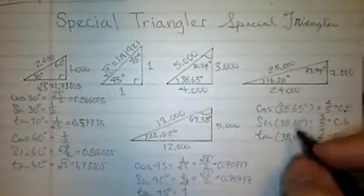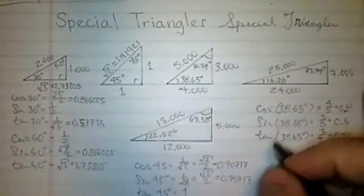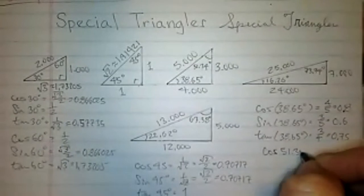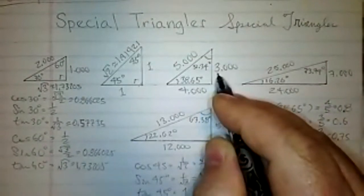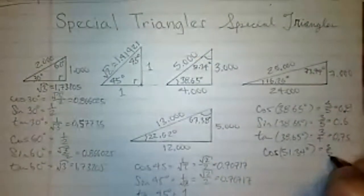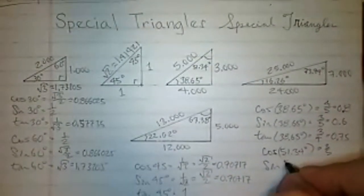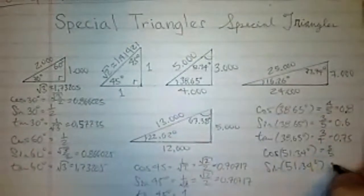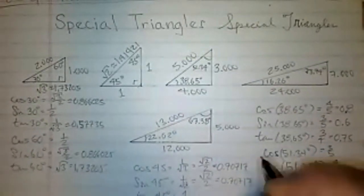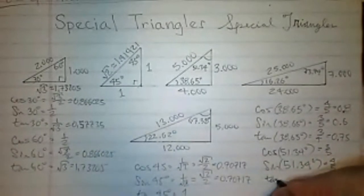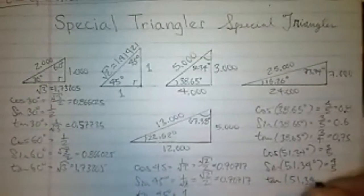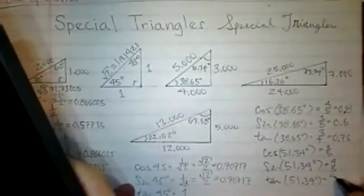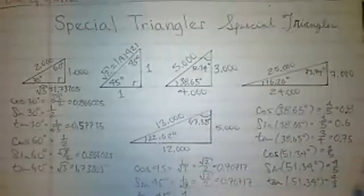So let's now do the cosine of 51.34 degrees. Cosine is adjacent over hypotenuse. So that's three fifths, which we've already discussed is 0.6. The sine of 51.34 degrees is opposite over hypotenuse. So that's four fifths, which we already said was 0.8. And then finally, the tangent. The sine of 51.34 degrees is opposite over adjacent. So that is four over three, which is 1.3333, a non-terminating decimal.